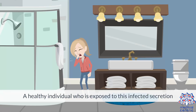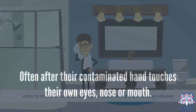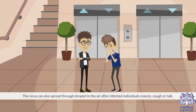A healthy individual exposed to infected secretion, either by direct contact or by touching a contaminated object, becomes infected often after their contaminated hand touches their own eyes, nose, or mouth. The virus can also spread through droplets in the air after infected individuals sneeze, cough, or talk.